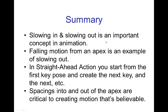To summarize: slowing in and slowing out is an important concept in animation, and falling motion from an apex is a classic example of slowing out. In straight ahead action, you start from the first key pose and then create the next key, and then the next, and so forth. The spacings as you're slowing out of an apex, or for rising motion slowing into an apex, are critical to creating motion that's believable. We'll be looking at that in the next tutorials. See you then.